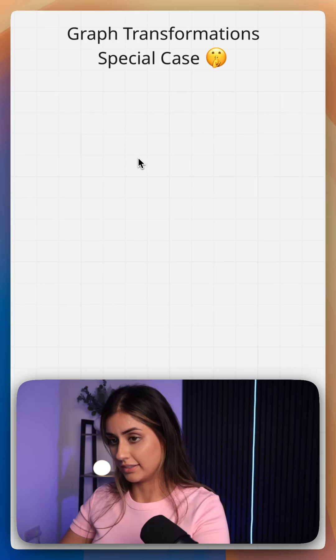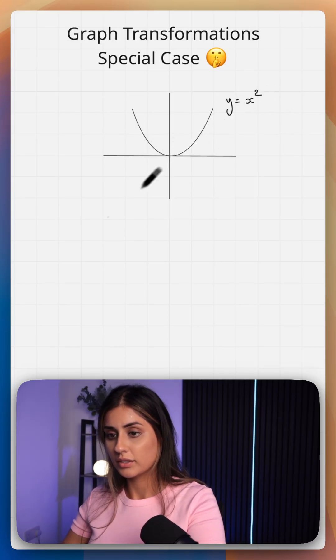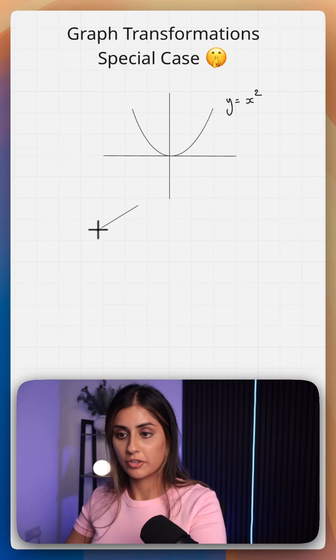Let's look at the graph of x squared, for example. This is a u-shaped parabola. And on this, we're going to apply two separate transformations.